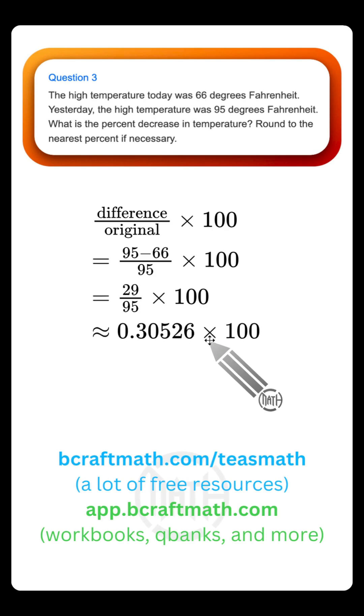And I'm still tacking on this times 100. But all that times 100 really means is that you're going to take this decimal and convert it to a percent. Some of you may move your decimal two places to the right, which is the same thing as multiplying by 100. Either way, you'll get somewhere around 30.5 to 6 percent.